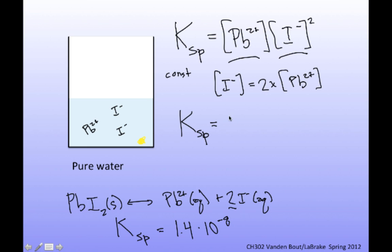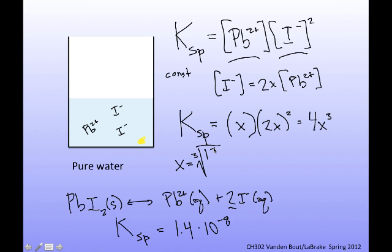Ksp equals the lead ion concentration, which I'll call X, times the iodide concentration squared. The iodide concentration is two times the lead concentration, so that's (2x)². When I put that all together, this comes out to be 4x³, which allows me to solve for X. Solving gives X equal to 1.5 times 10 to the minus 3, and concentrations are in molar.